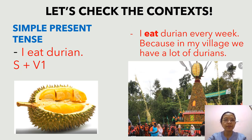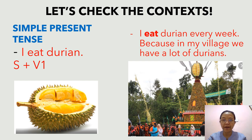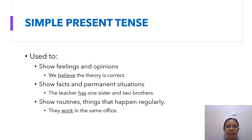'I eat durian.' We can use this simple present tense sentence in a context like: in my village, we have a lot of durians, so I eat durian every week. Simple present tense.